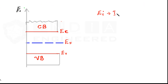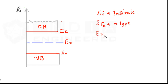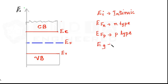EI is used for intrinsic material and EF for the general case. If we want to talk about n-type and p-type at the same time and compare them, we may use EFN to represent the Fermi level in n-type material and EFP to denote the Fermi level in p-type material. We will also be using EG to represent the energy gap.